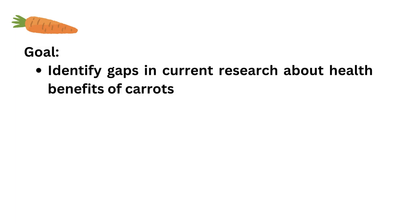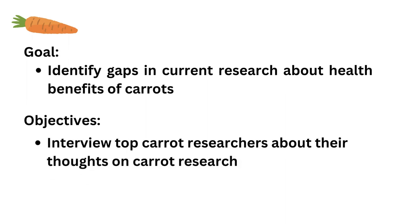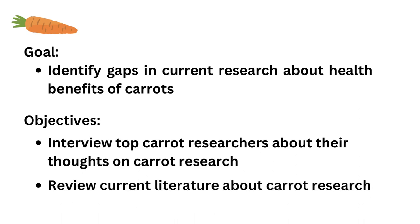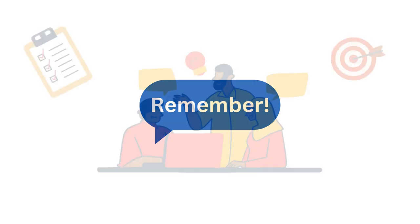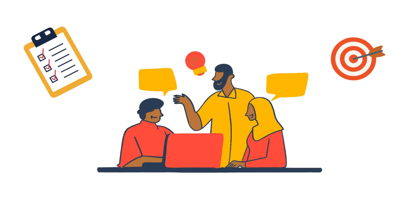For example, a goal for a project about carrots could be: Identify gaps in current research about health benefits of carrots. Corresponding objectives could be: Interview top carrot researchers about their thoughts on carrot research, or Review current literature about carrot research. Remember to make these specific and concise. While discussing project goals, also discuss individual member goals, which can be integrated later when your group divides the work.